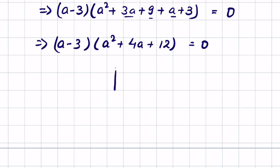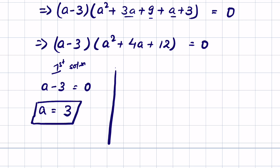We have two solutions. First solution is when a minus 3 is equal to 0, in that case a is equal to 3. The second solution is when a square plus 4a plus 12 is equal to 0.